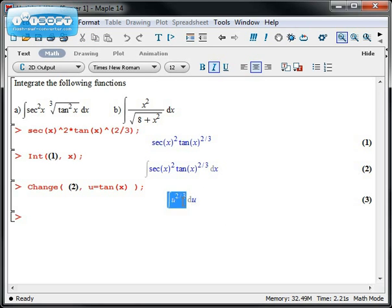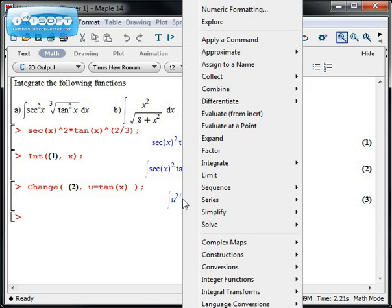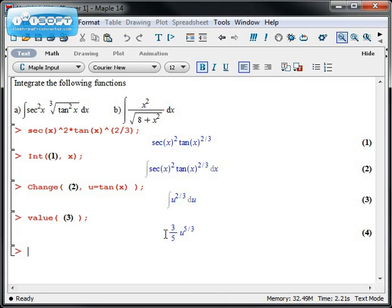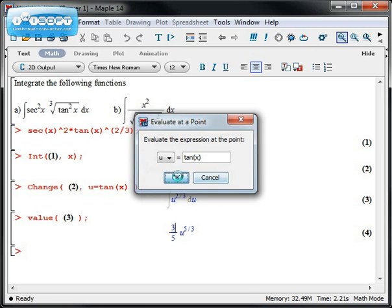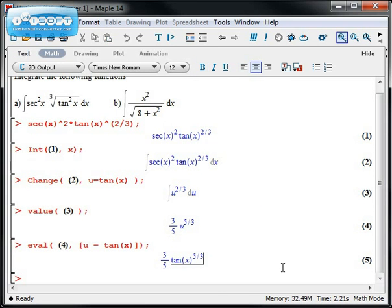Once you have a substitution in this inert form, you can right-click and go over to evaluate from inert, and Maple will then finish the job. This gets me three-fifths u to the five-thirds. Of course, I always have to remember to back-substitute. We'll just go and evaluate it at a point at u equals tangent of x. That was the substitution we made. So there would be my antiderivative.